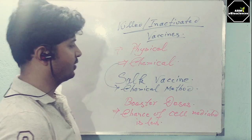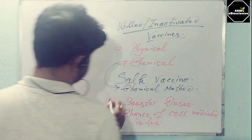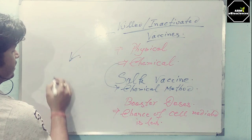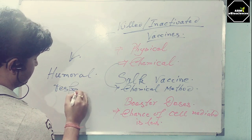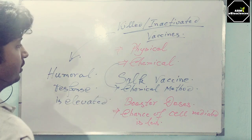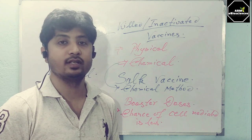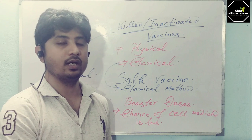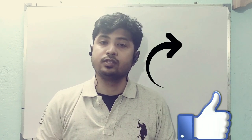This is the overall concept of whole organism vaccines. In the case of killed vaccines, the humoral response is highly elevated. Next time I will come with subunit vaccines, then DNA vaccines and recombinant vaccines. Keep watching and be with me. If you like my classes, give a big thumbs up and don't forget to subscribe to my channel, as it motivates me to take future classes for you. Thank you and be with me.